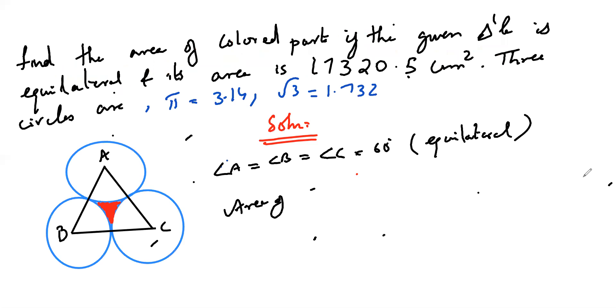So area of the shaded region equal to area of triangle ABC minus area of three sectors. Area of triangle ABC they are given in the question, that is 17320. Area of triangle they are given.